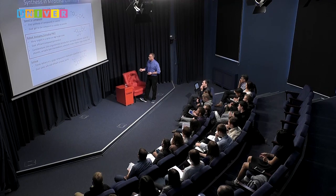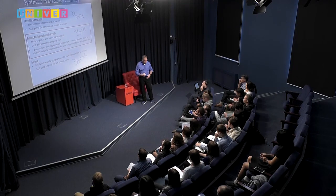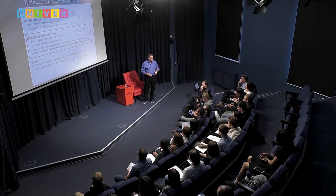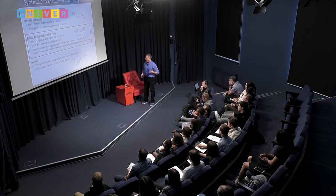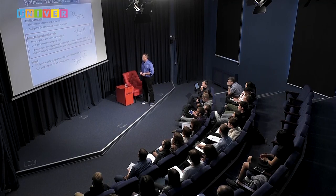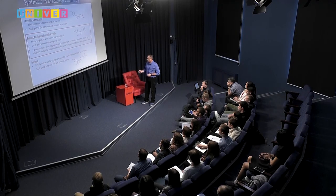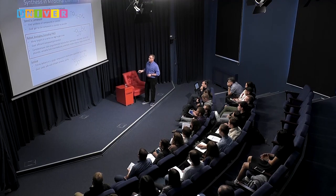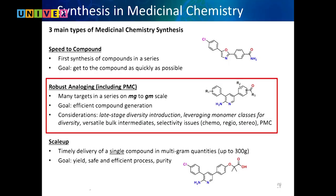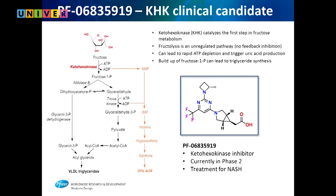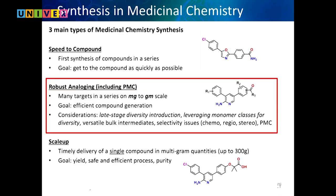Toward the end of the sequence you pick one compound and make it on scale — about 300 grams initially before giving it to development. We test it for safety, then process chemistry makes kilograms. We want to give them a safe, efficient, high-purity synthesis. Those are the three types of synthesis we do in the discovery labs; the one we do most is analog synthesis.